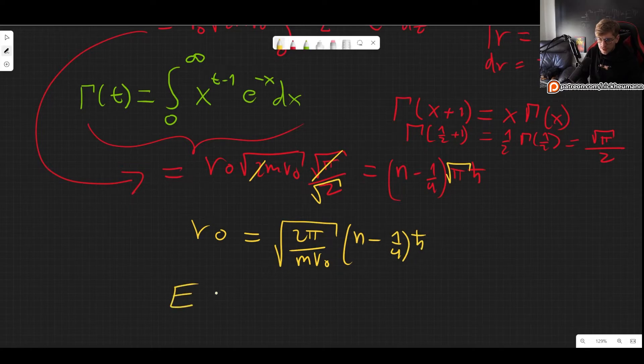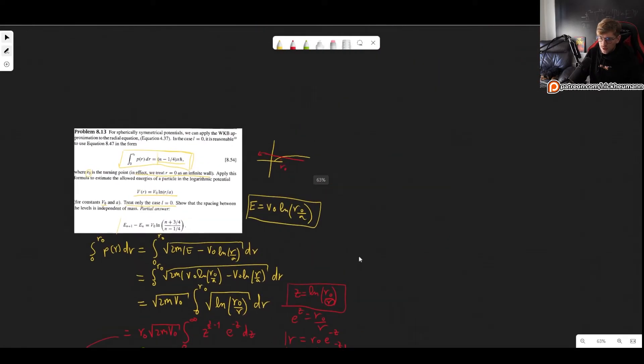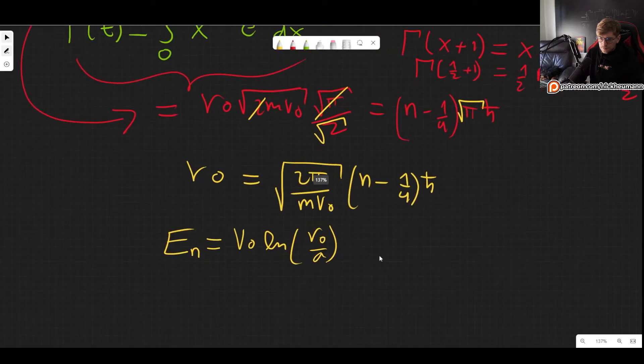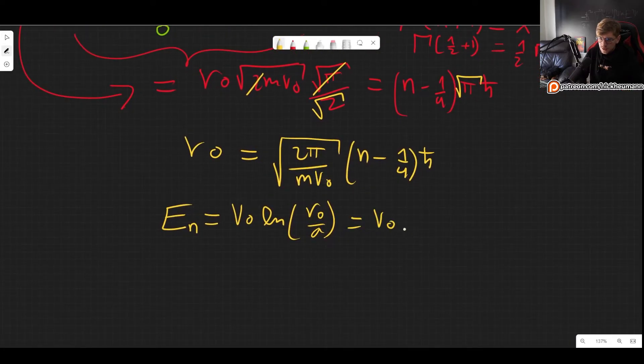And now we plug this into our expression for the energy which are the energy levels and this is V0 natural log of, it used to be R0 over R, no it was R0 over A. I'm double checking, R0 over a, yes R0 over A.